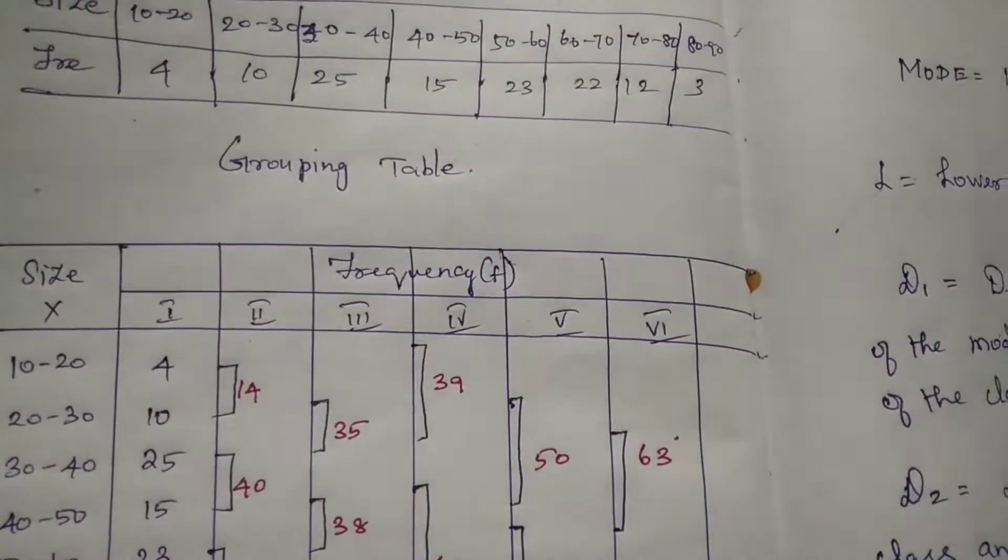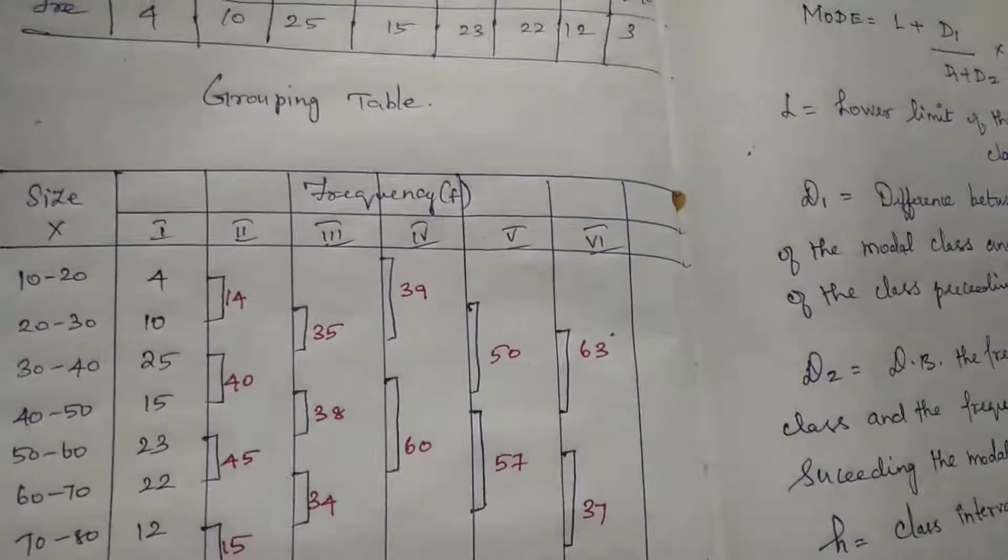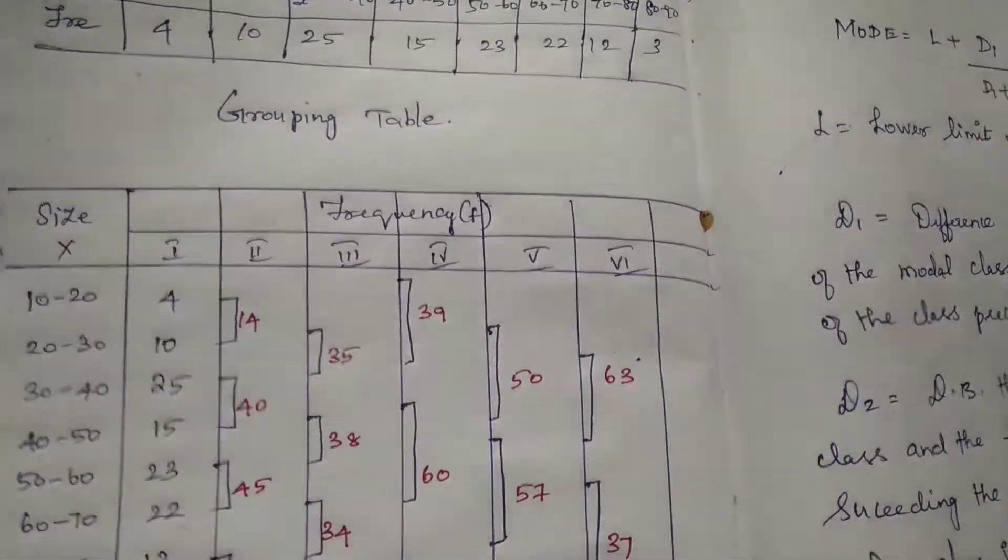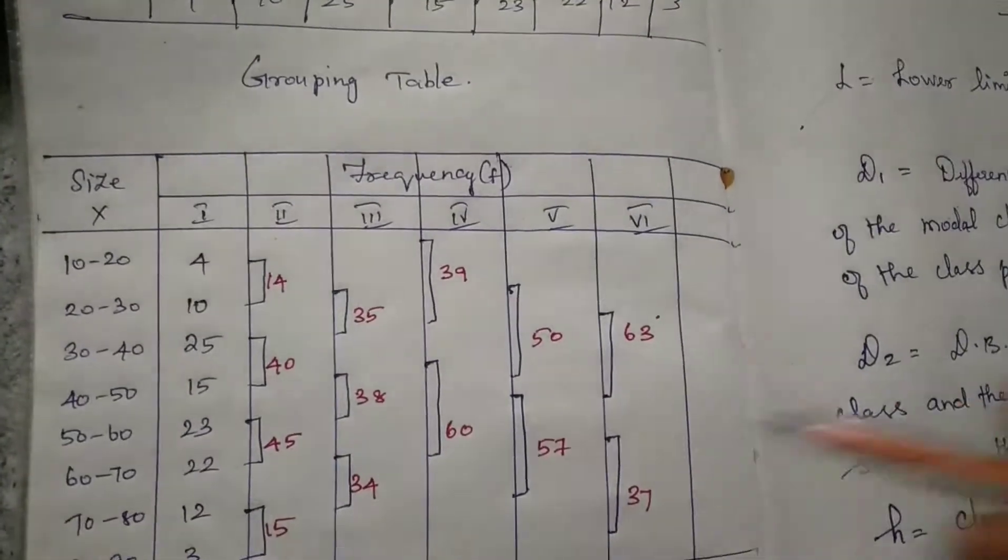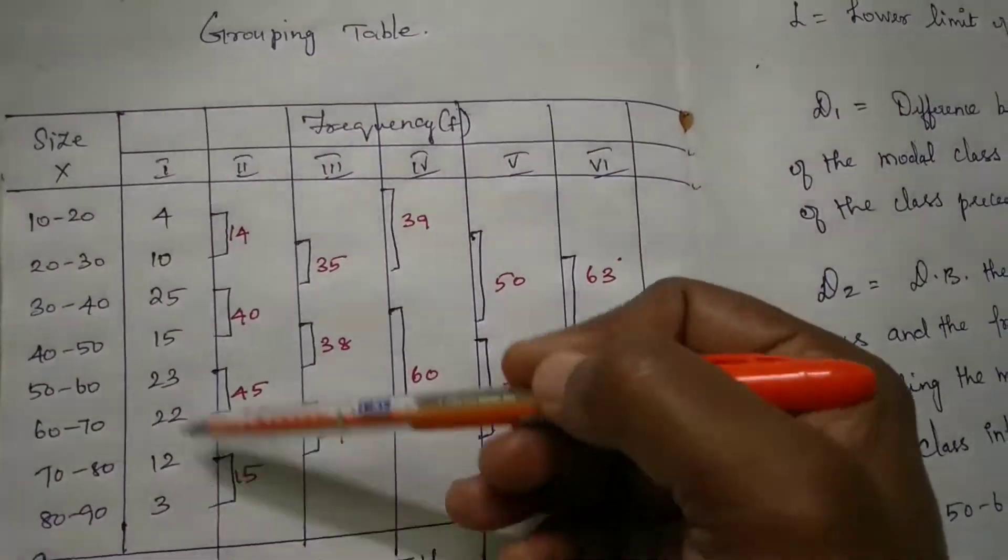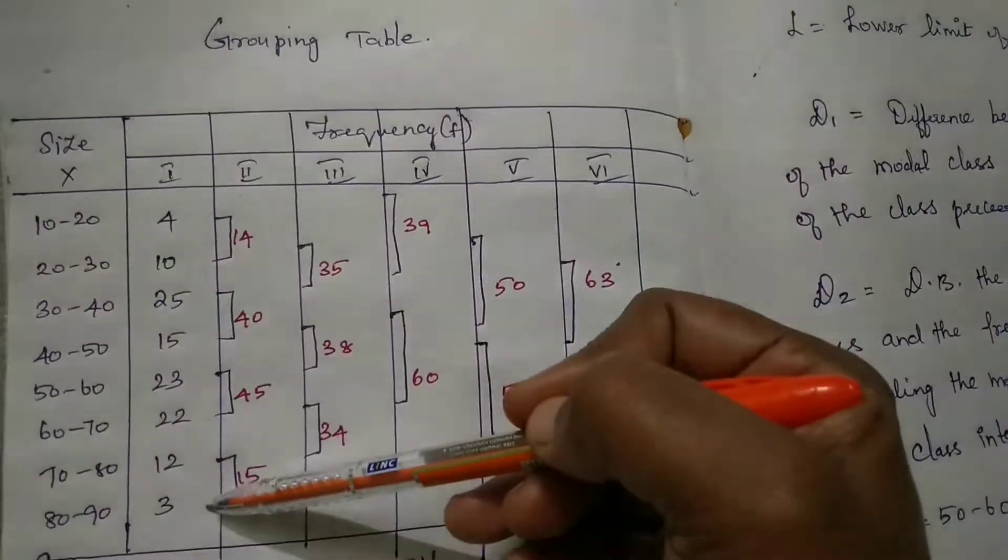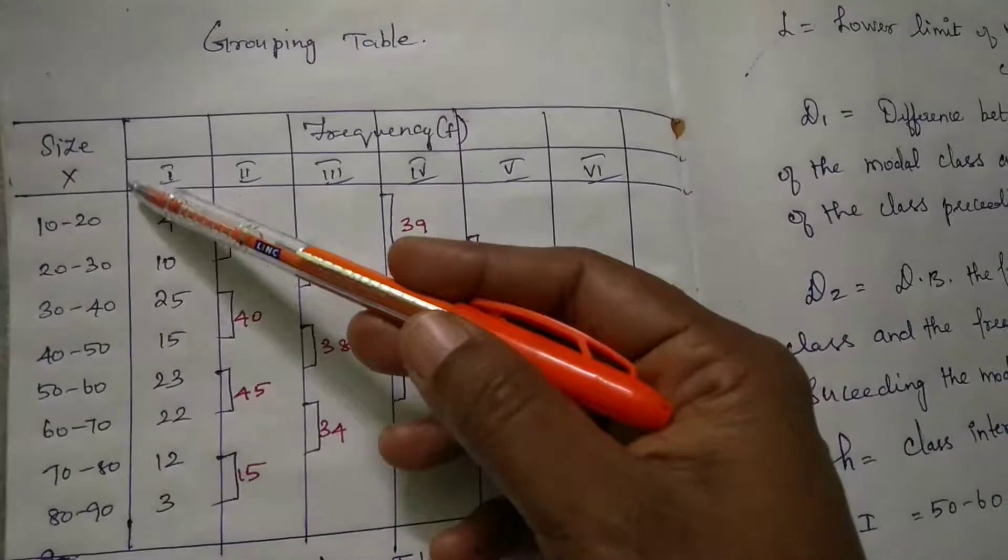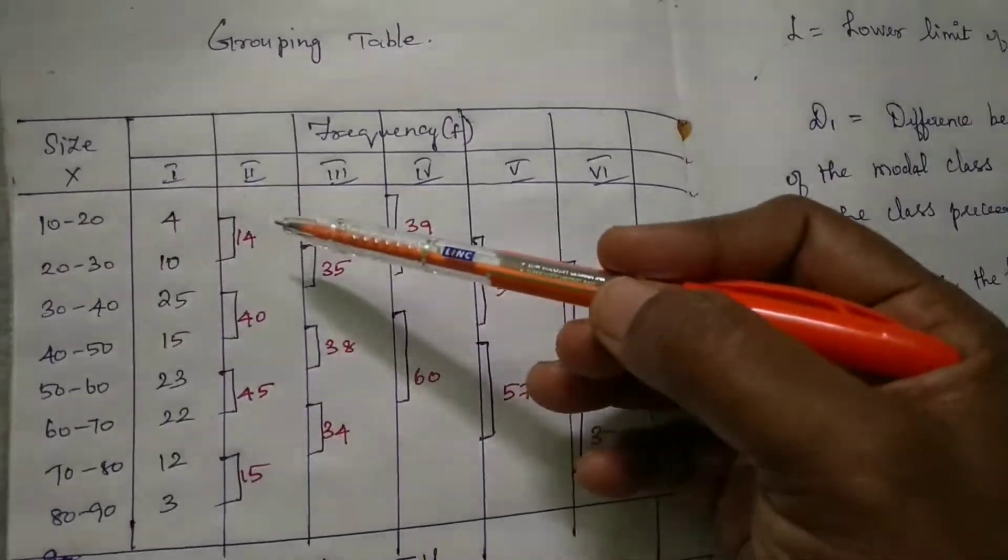For the grouping table, we write sizes - that are class intervals - in column 1, then columns 2, 3, 4, 5, 6. Write the class intervals 10 to 20 and their frequency. You should write the frequency in column 1.